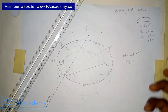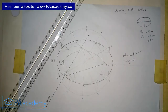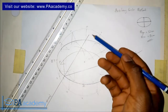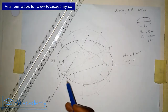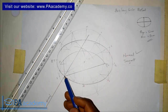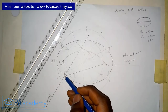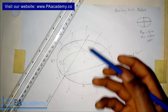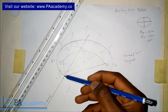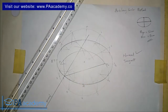Now let's look at the tangent. We are looking at both: how to draw a normal and how to draw a tangent to an ellipse. We already have the normal. To get the tangent, we are going to draw a line that is perpendicular to the normal from point Y — the given point where we are asked to draw the tangent. This line will be at 90 degrees to the normal.